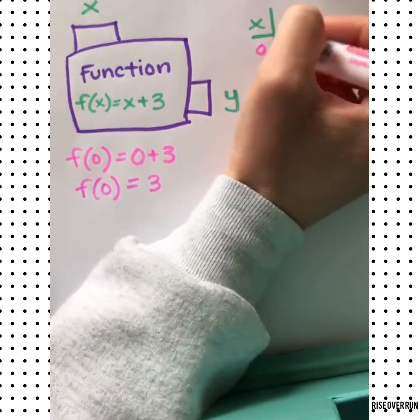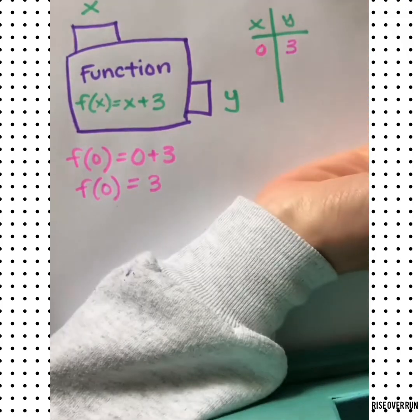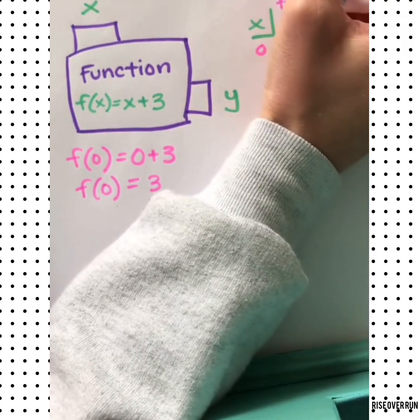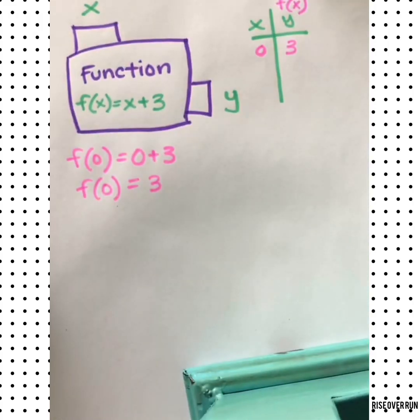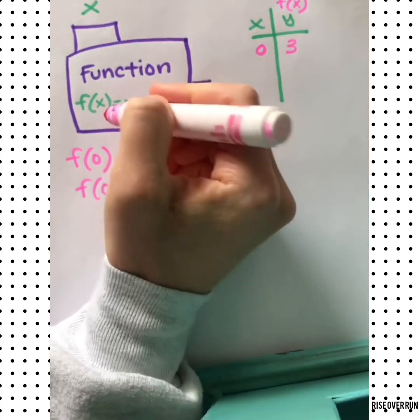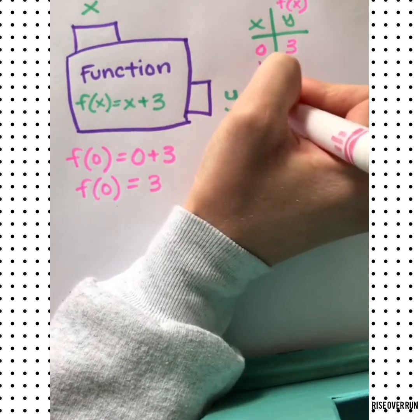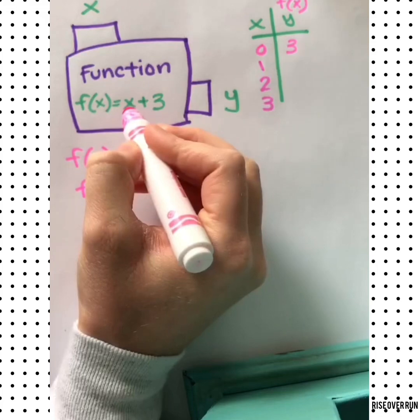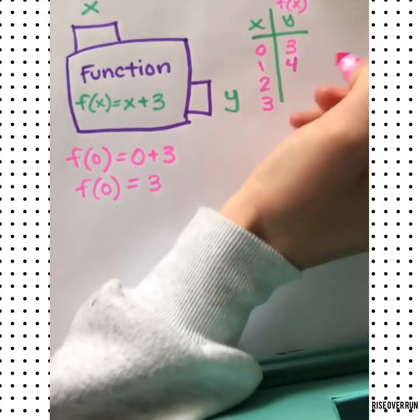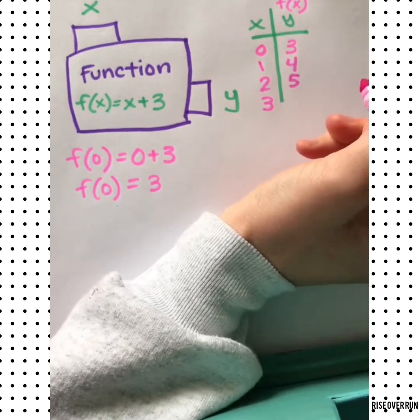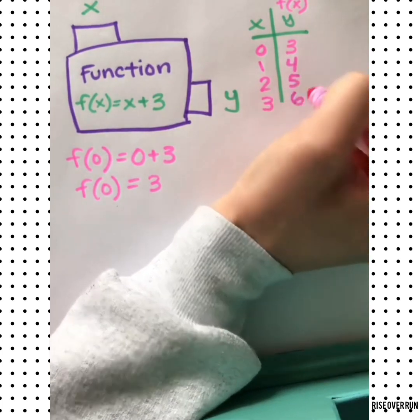In our table of values, we have a 0 and we have a 3. This is the output or the y, but now we'll call it f of x. We can keep building this table of values with this function by plugging in more x's. If we plug in 1 for x, we get 4. If we plug in 2, we get 5. And if we plug in 3, we get 6.